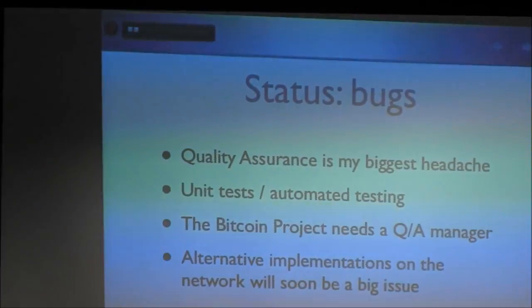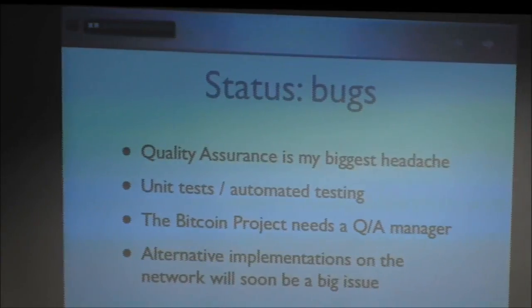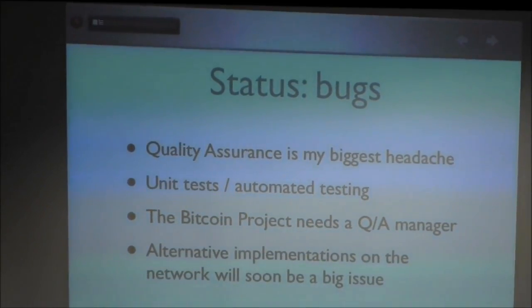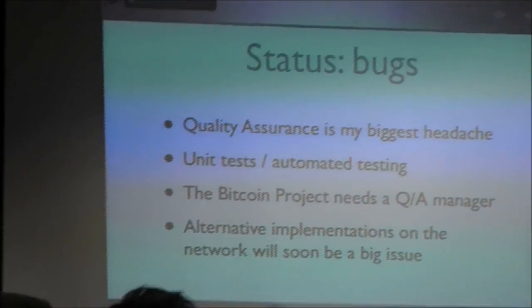The other big thing happening is we're getting alternative Bitcoin implementations. We started with Satoshi's code — that was the only thing Bitcoin was. Now people are re-implementing Bitcoin in all sorts of different languages and on different platforms, which is a fantastic thing and I fully support it. We just need a good test plan to make sure alternative implementations don't screw things up.